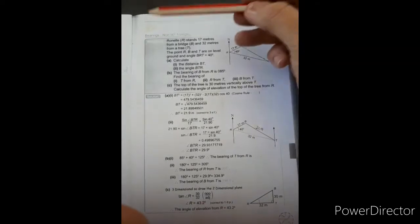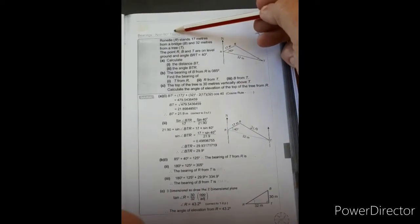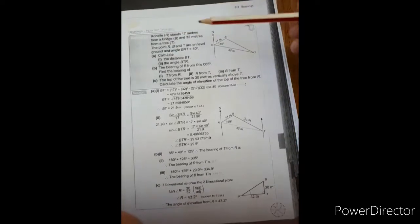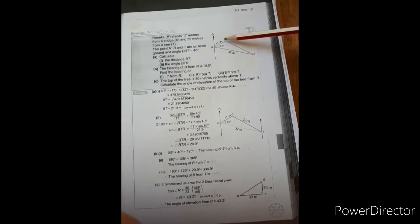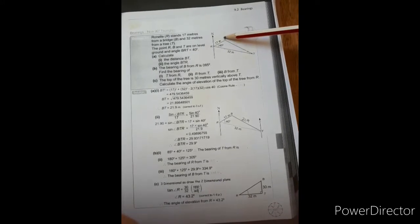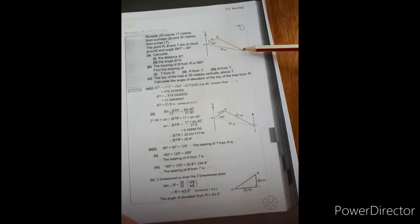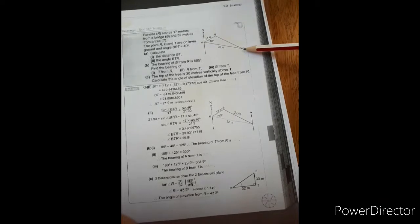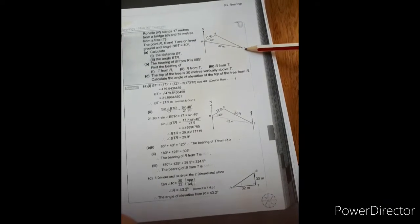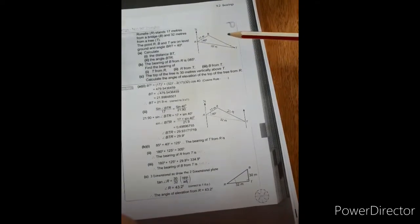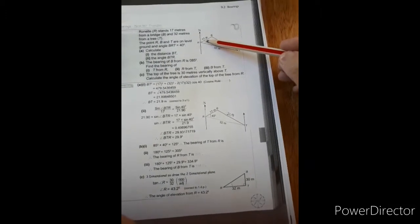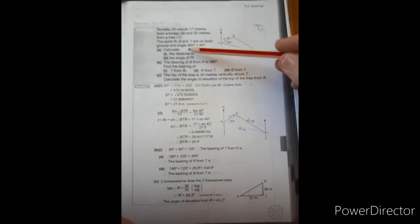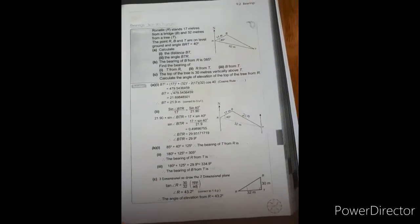This question is about bearings at a non-90 degree triangle. It tells you that we've got Ronelle standing 17 meters from a bridge which is B, and Ronelle standing 32 meters from a tree which is T. The angle between B and R and T is 40 degrees, and it asks you to calculate the distance B and T.